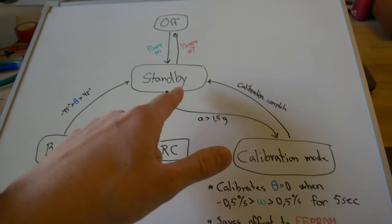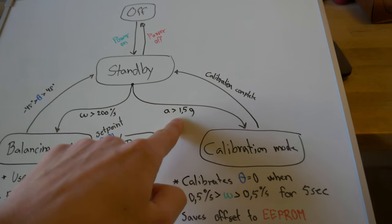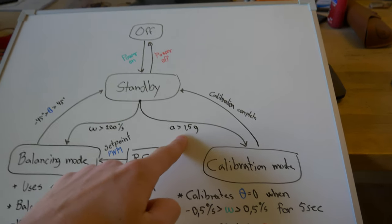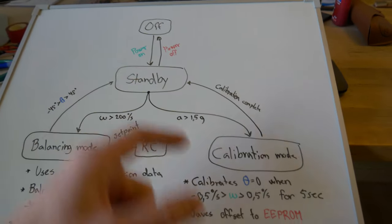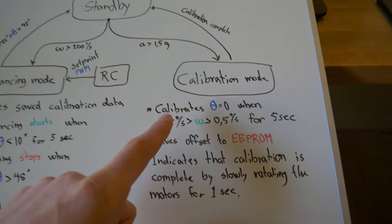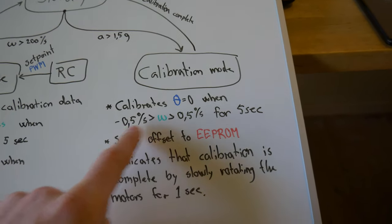If you want to go into calibration mode, the condition says that the acceleration needs to exceed 1.5 G's. So you basically need to shake the robot and then it's going to go into calibration mode.